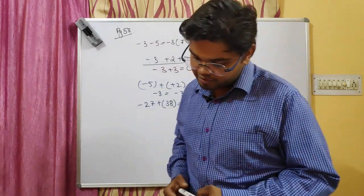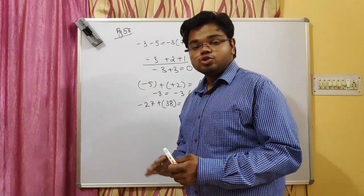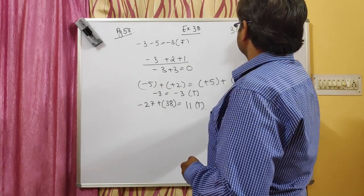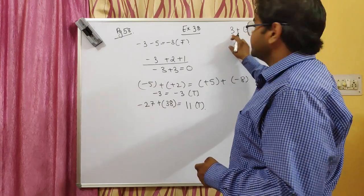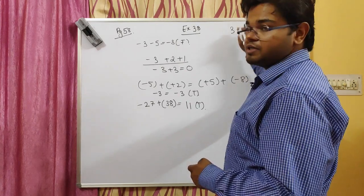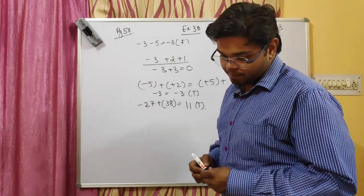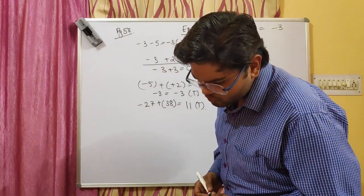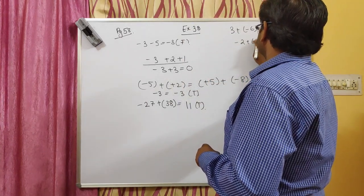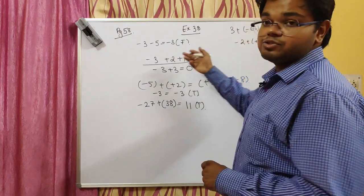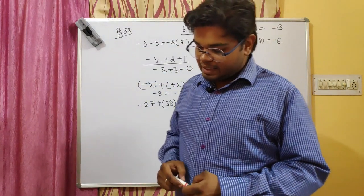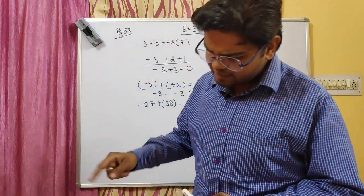Question two you won't be doing. Now question three: add the following using a number line — but you will simply be adding them without drawing a number line. Part one: plus three plus minus six. The absolute value of six is greater and it is negative, so the answer is minus three. Part two: minus two plus plus eight. Eight minus two equals six, so the answer is six.